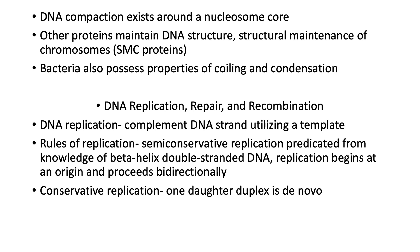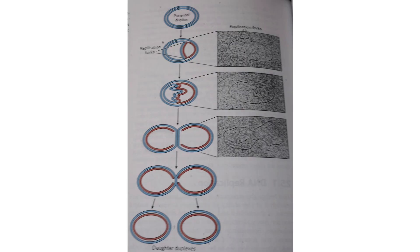The rules of replication are as follows. It's a semi-conservative replication, which is predicated from knowledge of the beta helix double-stranded DNA. Replication begins at an origin and proceeds bidirectionally. In conservative replication, one daughter complex is de novo. You see the parental duplex, separation of strands, and opposing synthesis or replication forks. As the strand begins to expose more and more, you get a greater amount of this.